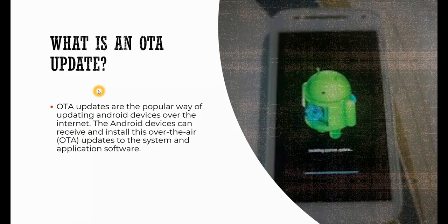What is an OTA update? OTA stands for over the air. OTA updates are a popular way of updating Android devices over the internet. Android devices can receive and install these over the air updates to the system and application software.